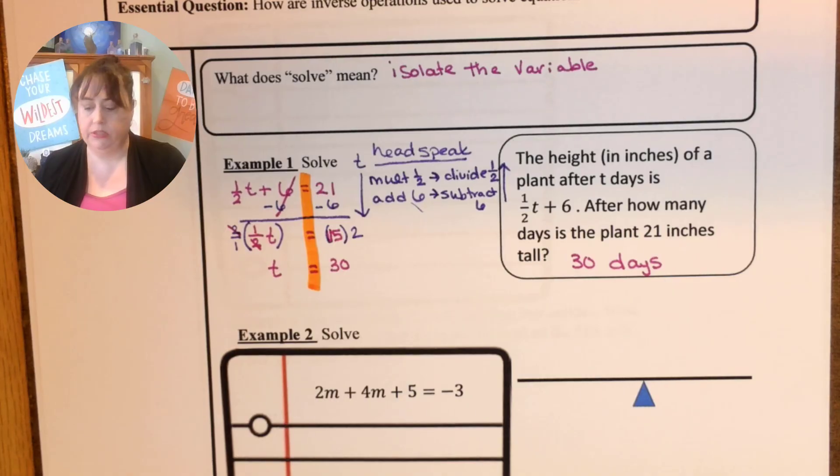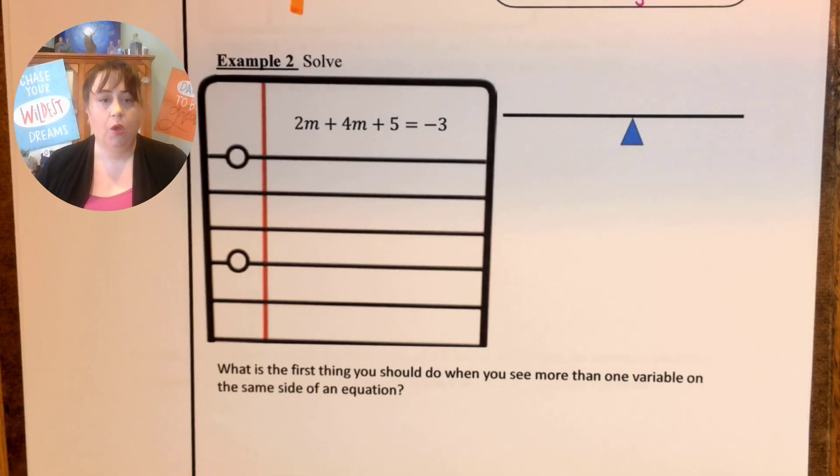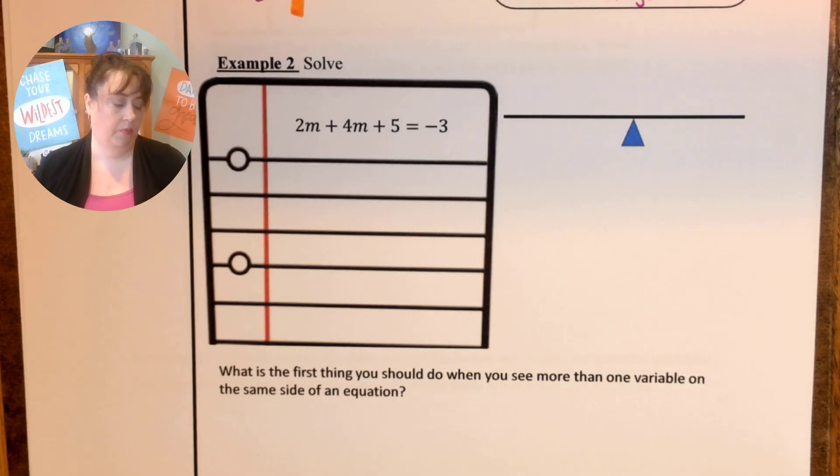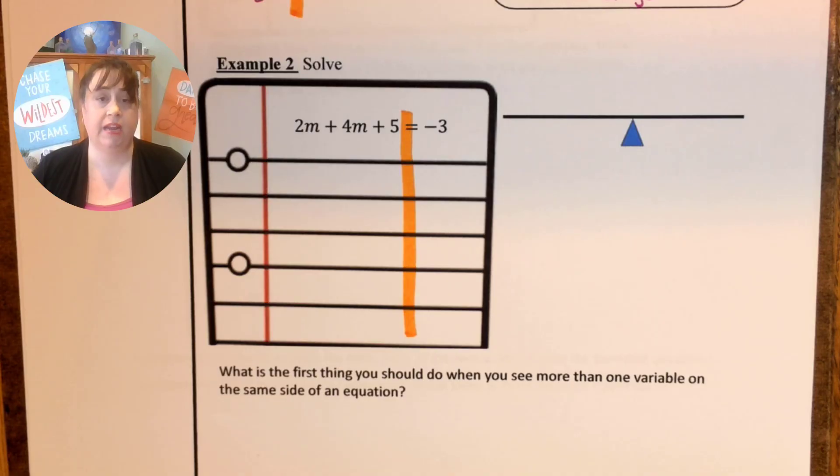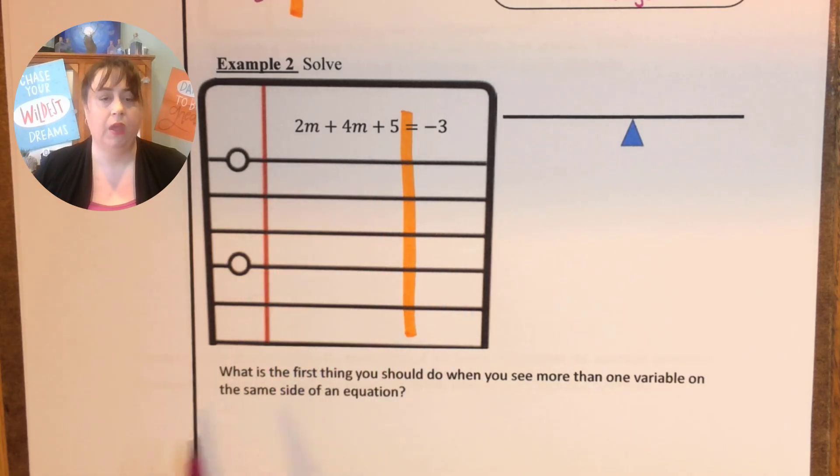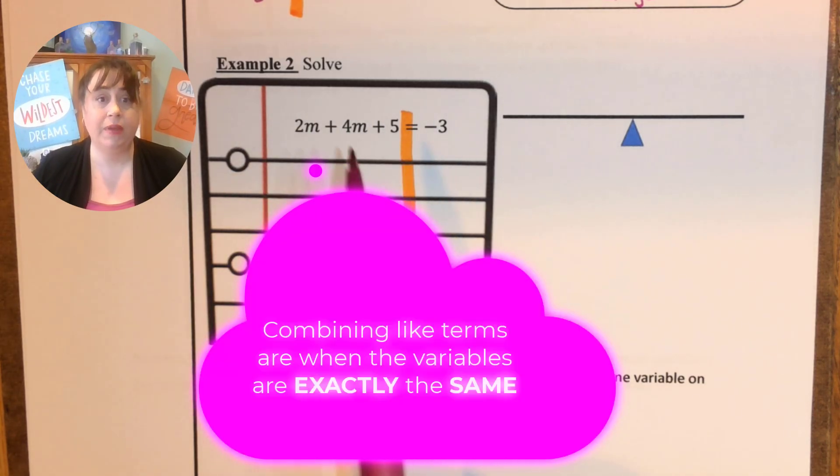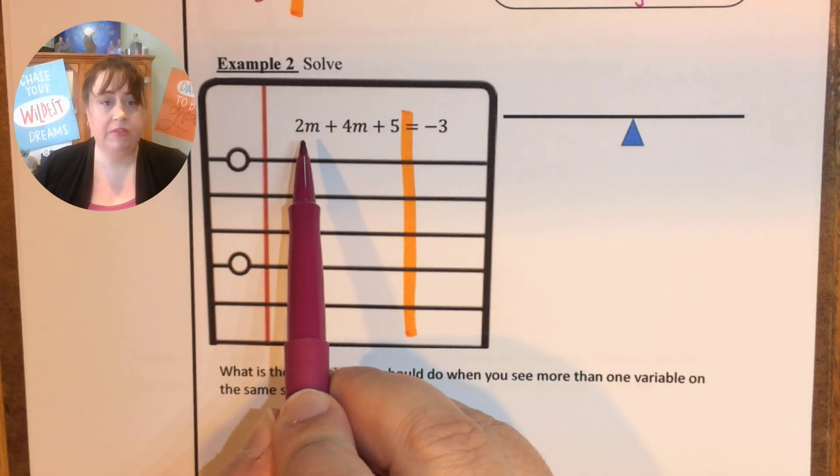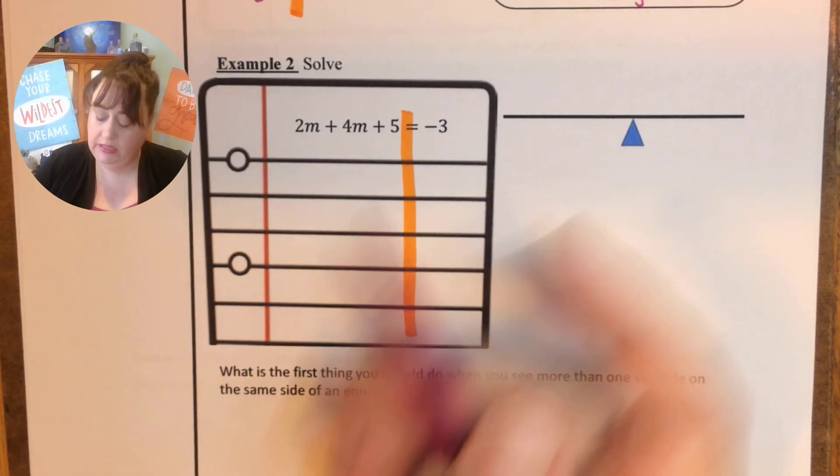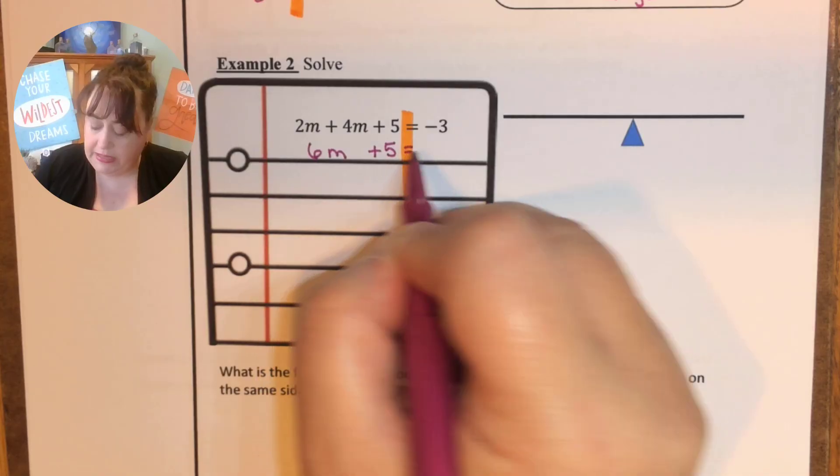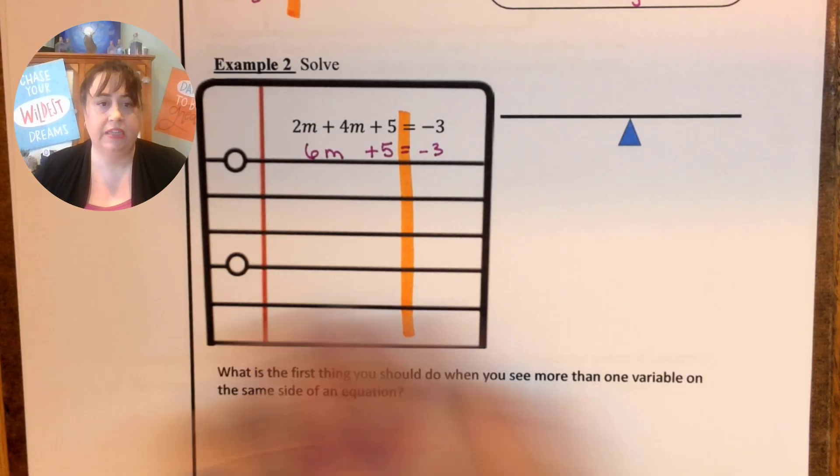So let's look at some more examples. In this example we have something interesting happening with our problem. We see that we have two m's. So let's draw in our road and start looking. When we look at this side of the road we see that we have two m's. We need to combine our like terms so that we can start looking at the problem in its simplest form. If I have two m's here and four m's here I have a total of six m's because two plus four is six. But I always write down the rest of the problem so that I have my complete equation.